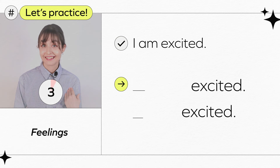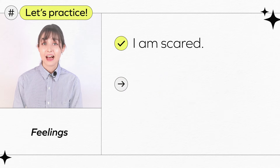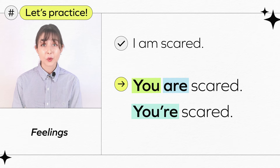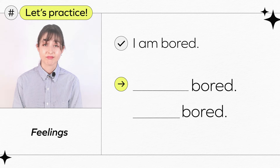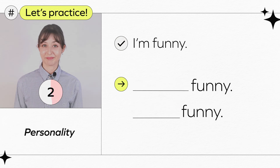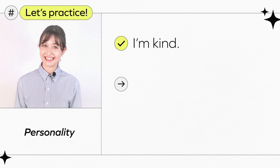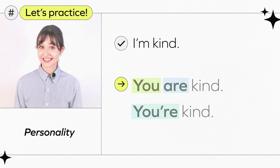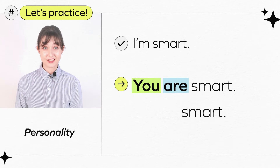I am excited — you are excited, you're excited. I am scared — you are scared, you're scared. I am bored — you are bored, you're bored. I am funny — you are funny, you're funny. I am kind — you are kind, you're kind. I am smart — you are smart, you're smart.